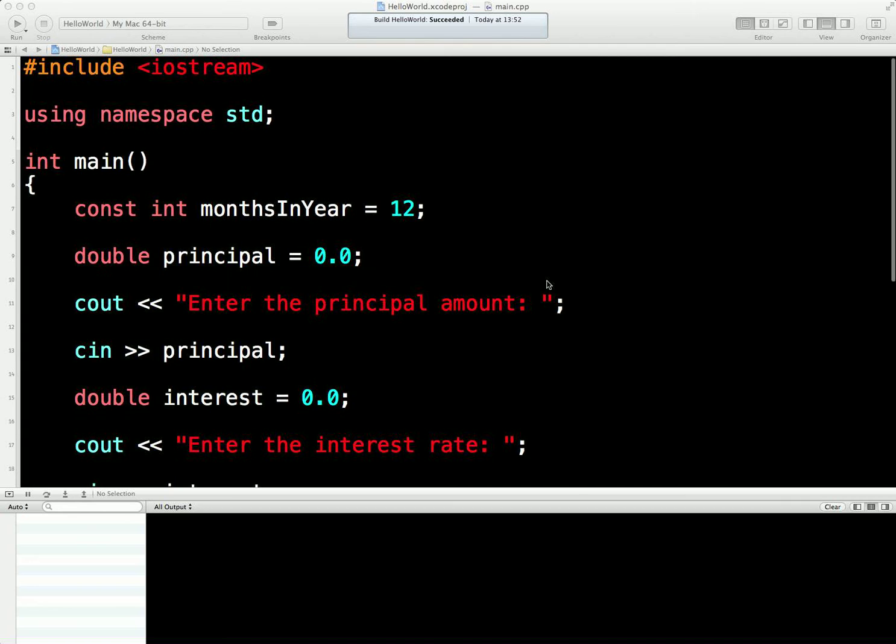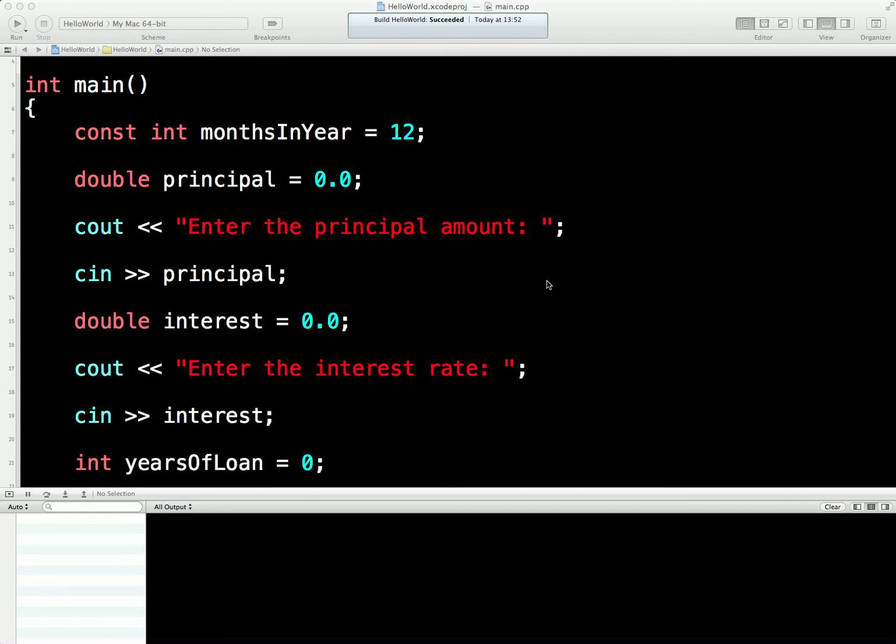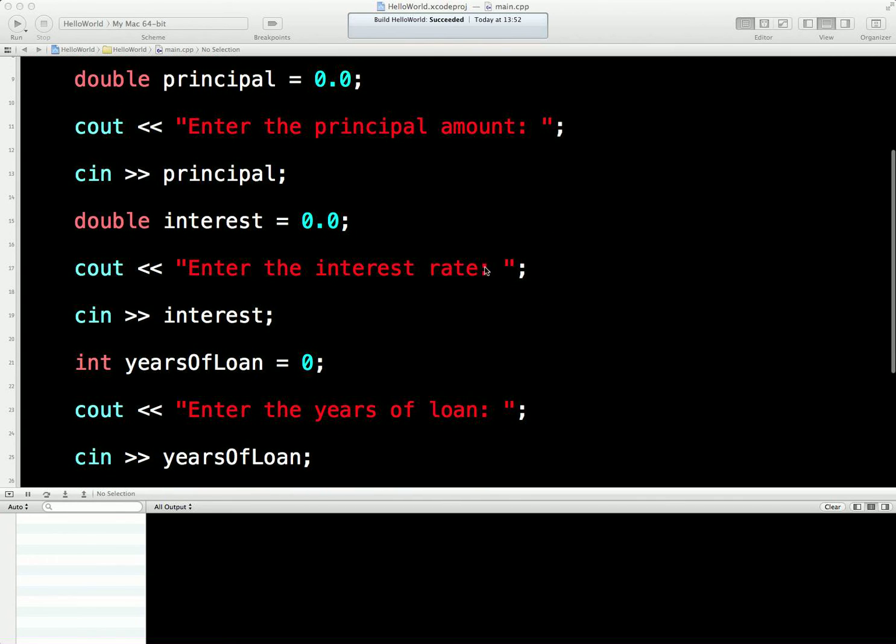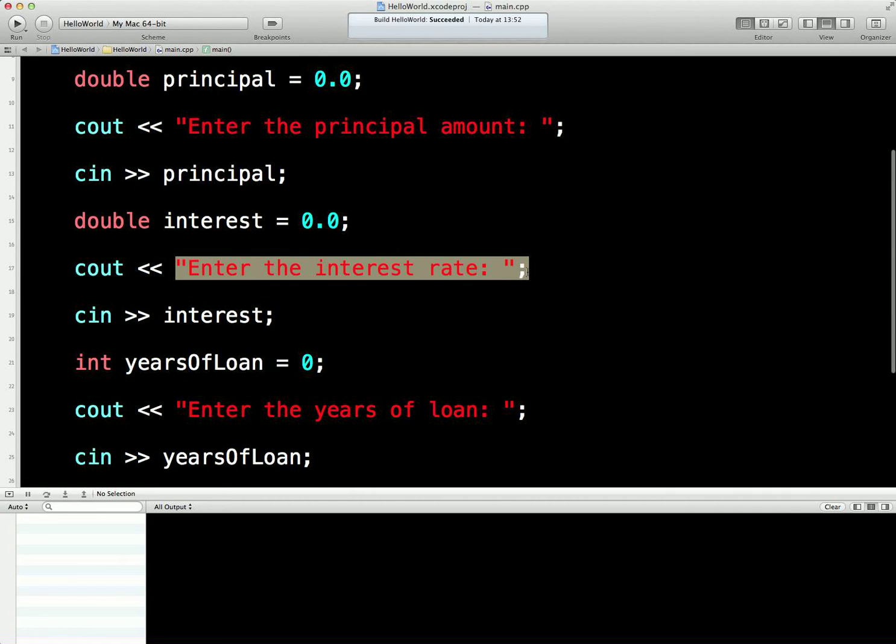One of the problems that we noticed earlier was that when I was entering interest rates here, I was entering them in the mathematical format which is between 0 and 1. Humans don't like dealing with that kind of thing. They'd much prefer to deal with big numbers like 5% being 5 or 17% being 17. So what I'm going to need to do now is have a human interest rate and then turn that into a mathematical interest rate.